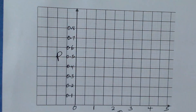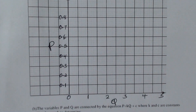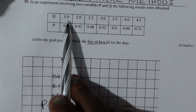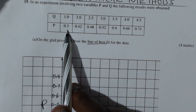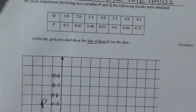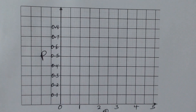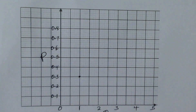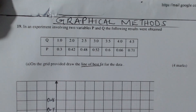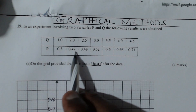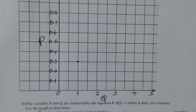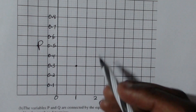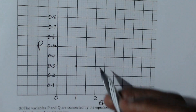Now we can plot the points. The first one is (1.0, 0.3) — that's q equals 1.0 and p equals 0.3, plotted there. The second one is (2.0, 0.42) — q equals 2.0 and p equals 0.42, plotted here.